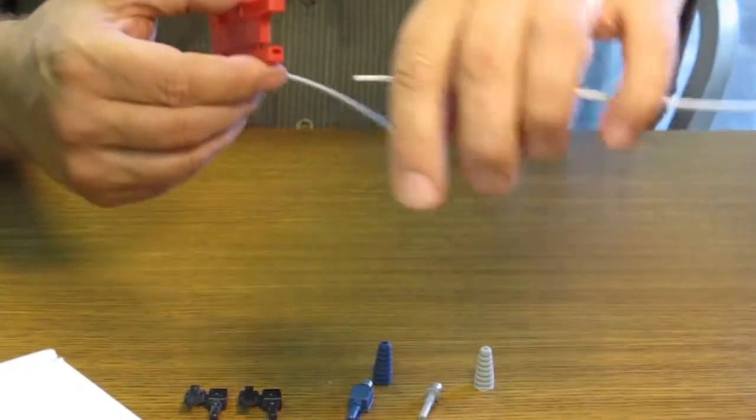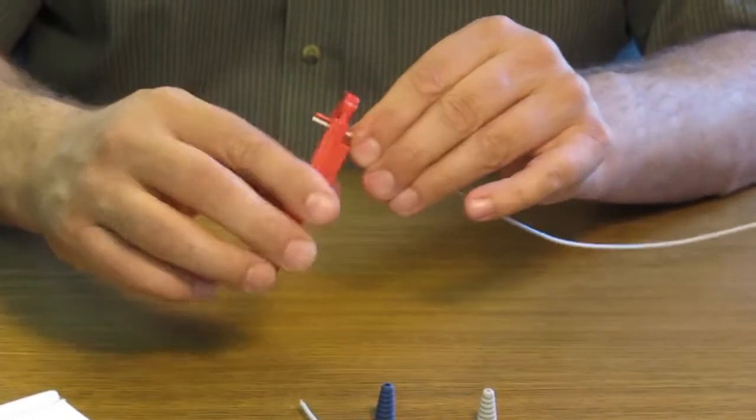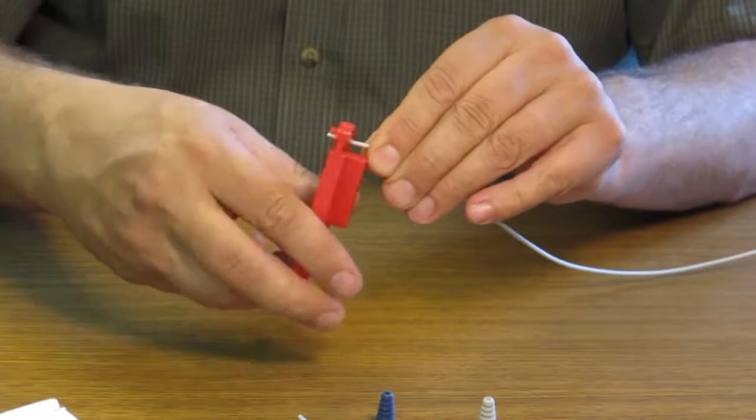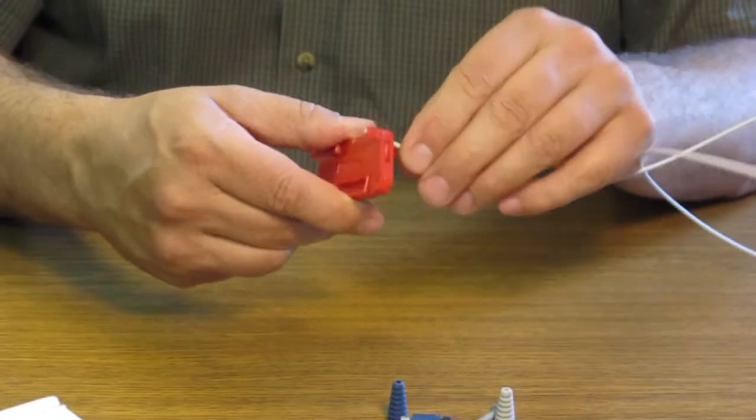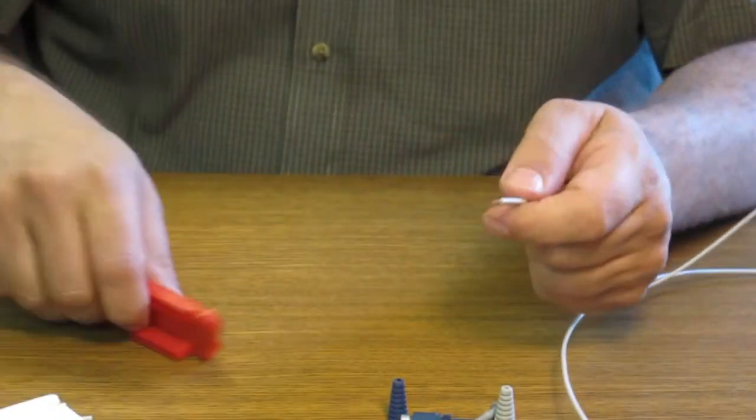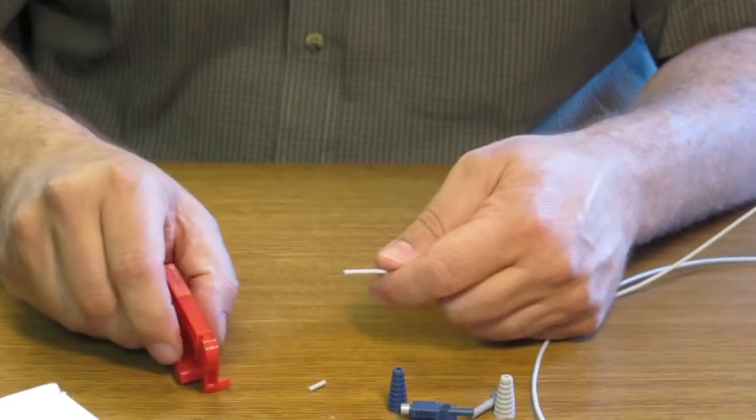We're going to rotate the tool one complete turn. You can either rotate the tool or you can rotate the fiber, either or, but that way now you've got your stripped jacket off of the cable.